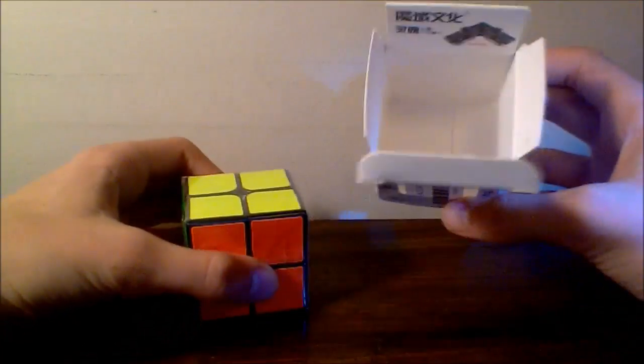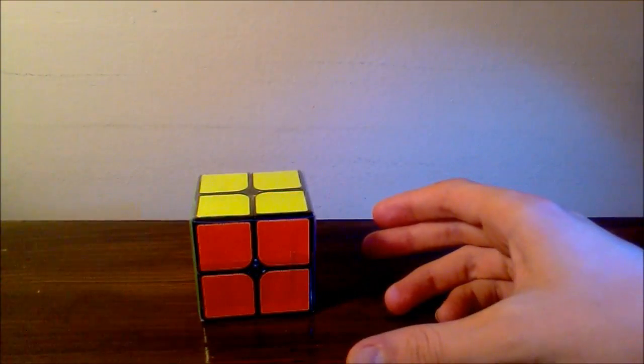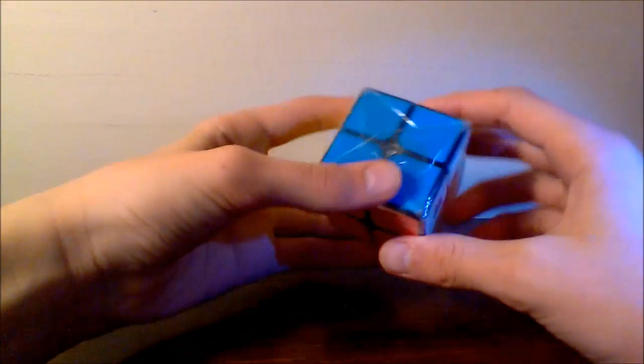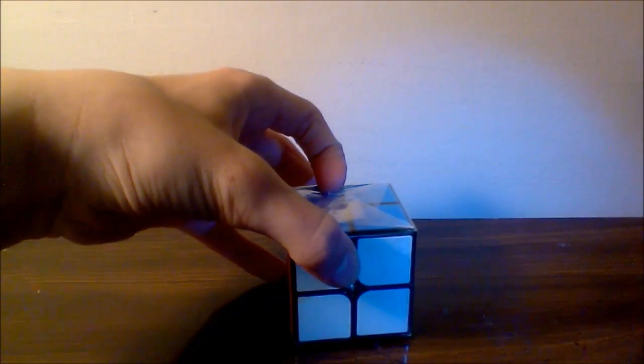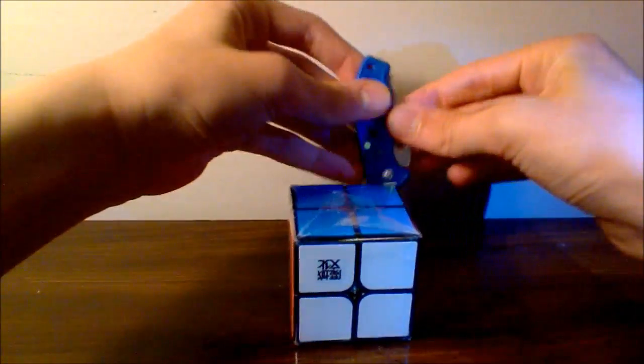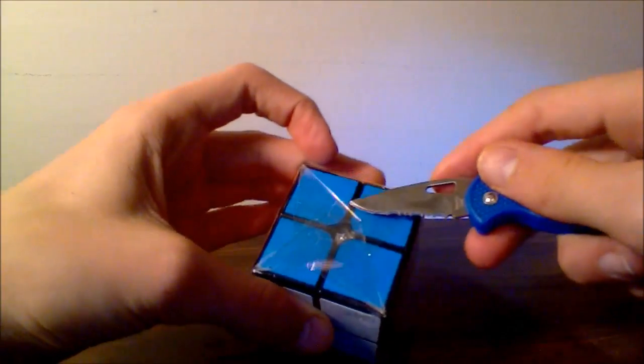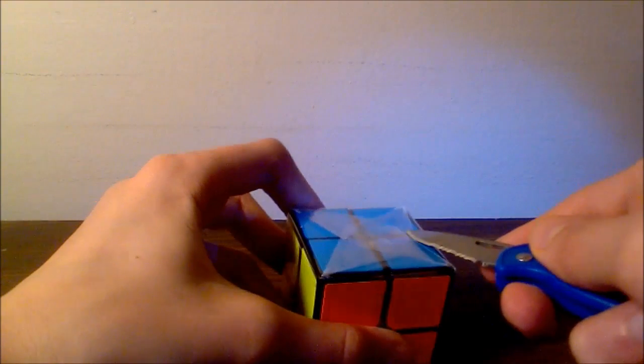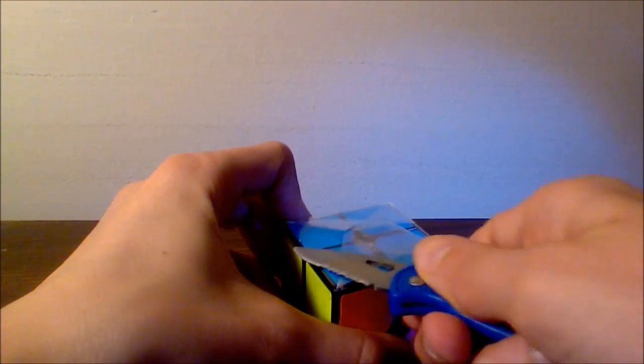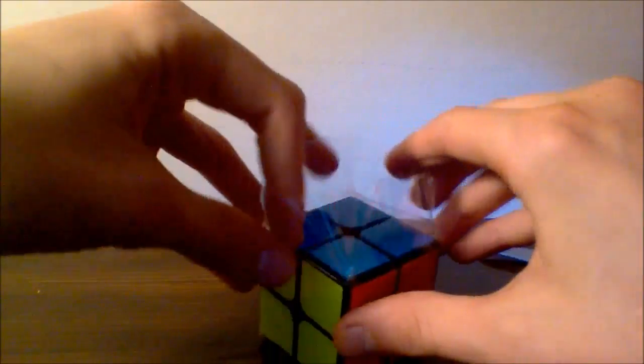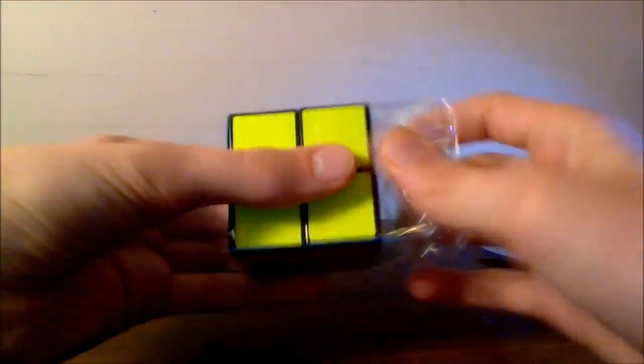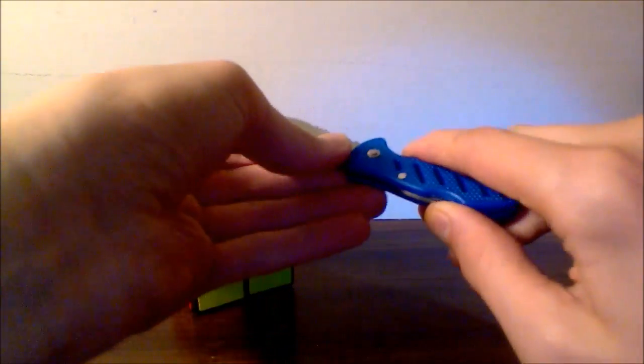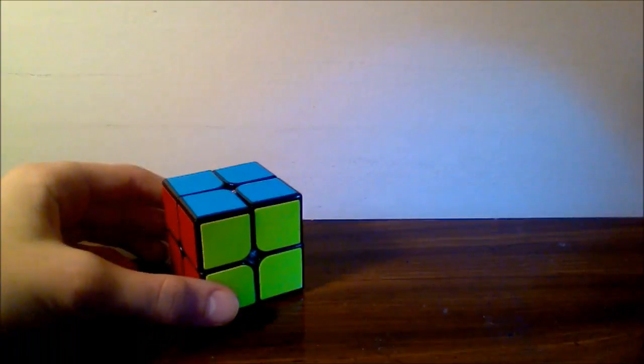So here's the actual cube and the box, the rest of the box is empty. We can set the box off to the side. And here we have the cube. Let's get my trusty tiny knife. Let's see if we can cut this without damaging any stickers. There we go. Cube removed from plastic wrapping. Let's put our tiny knife away.